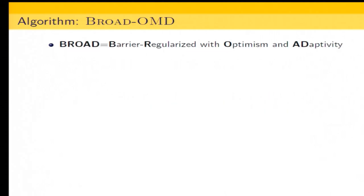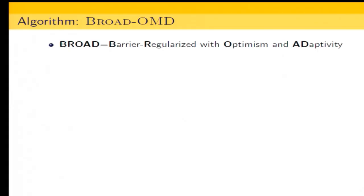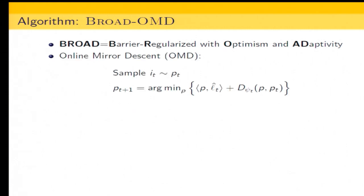Now I'll briefly go through our algorithm. We have several bounds, but they all come from a unified framework. We call this framework BROAD OMD — where BROAD stands for Barrier Regularized with Optimism and Adaptivity. Most of the techniques are already developed for the full information setting, and in this paper we are combining them in a novel way. It is a variant of online mirror descent.